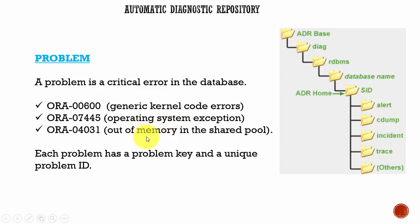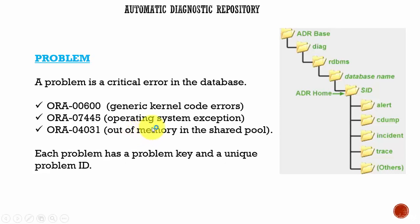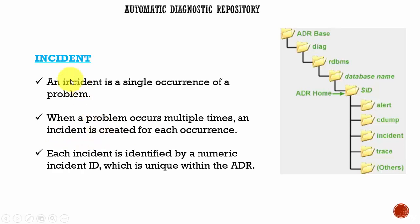These critical errors either require DBA intervention or Oracle support intervention. Each problem has a problem key and a unique problem ID. An incident is a single occurrence of a problem — whenever a problem occurs, an incident is created. If a problem occurs multiple times, an incident is created for each occurrence. For example, if we get ORA-04031 errors 10 times in a day, then 10 incidents will be created. Each incident is identified by an incident ID.